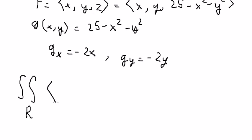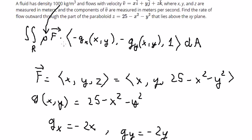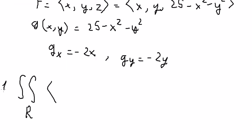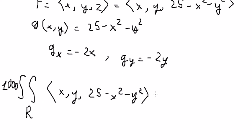We compute the dot product between vector F and the surface normal, putting 1000 outside. We have the vector (x, y, 25 minus x squared minus y squared) multiplied with the dot product components (2x, 2y, 1).